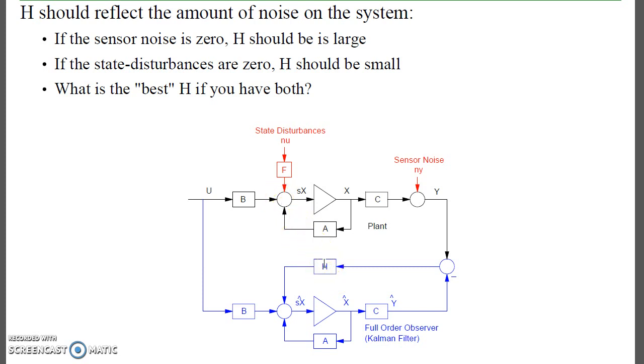On the other hand, if I have lousy sensors, I don't want to use H. I want H to be very small, because the sensor noise comes in and is amplified if H is large in my observer.